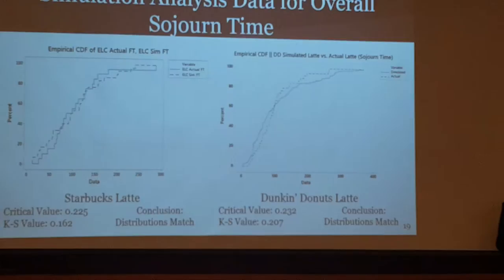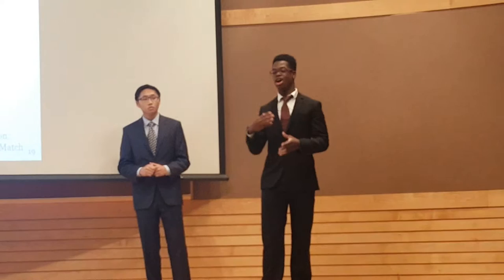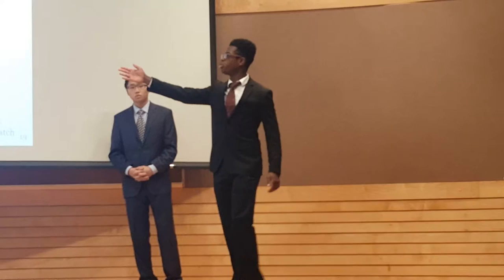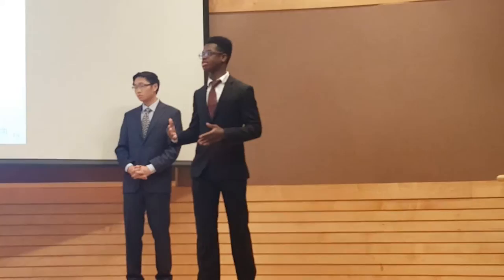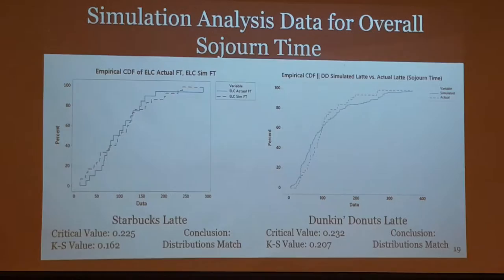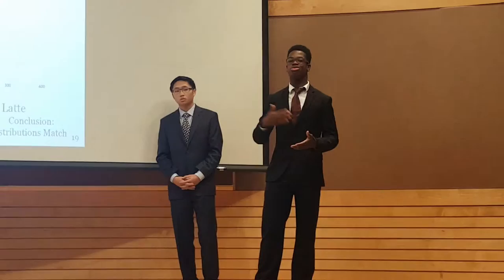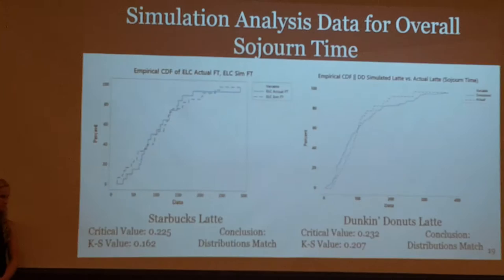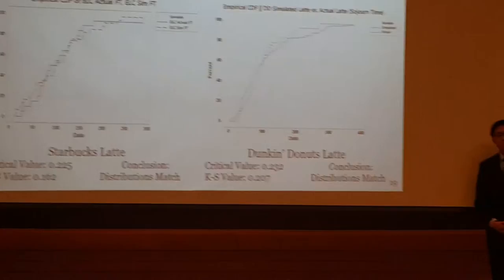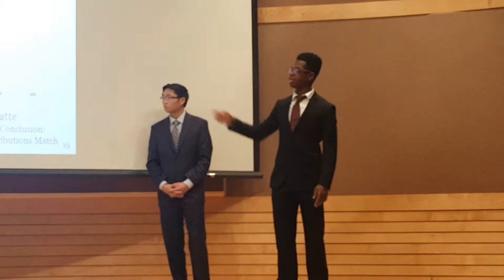This is the simulation analysis data for overall sojourn time — the time from when a customer enters the line to when they receive their drink at the end of the process. We used the Kolmogorov-Smirnov test to test the accuracy of our simulation. The Kolmogorov-Smirnov test compares the cumulative distributions of two data sets — observed and simulated — and assigns a KS value to show similarity. If the KS value is below the critical value, we can determine that the distributions match. For the Starbucks latte and overall sojourn time, the distributions match. For the Dunkin' Donuts latte, the distributions are also similar.